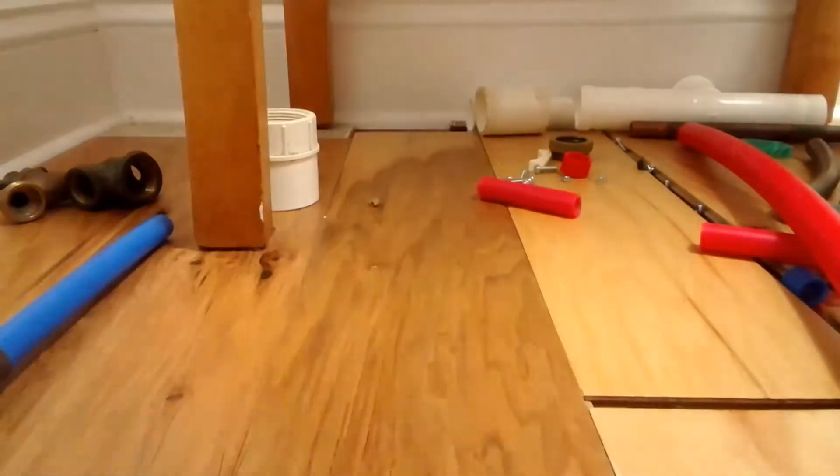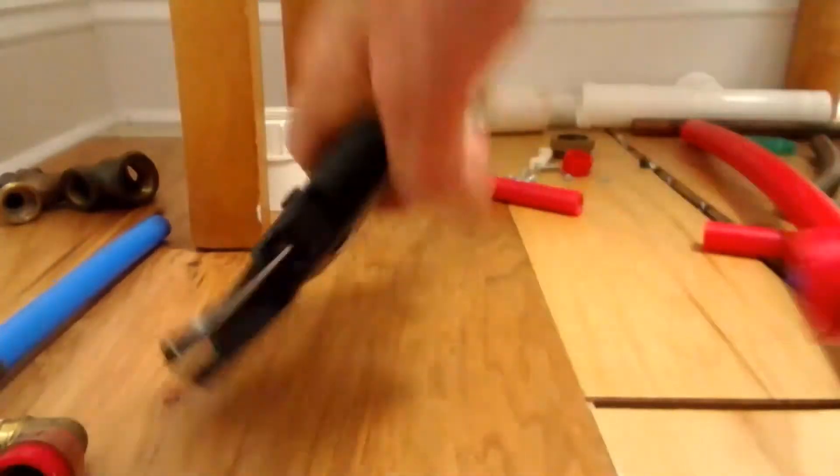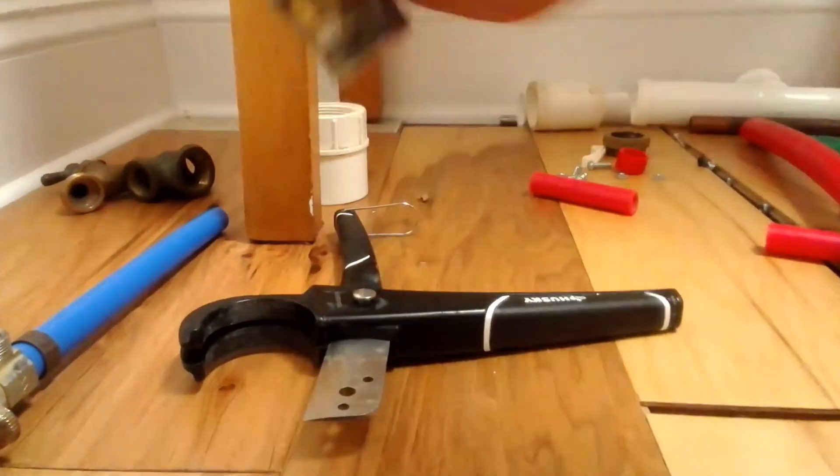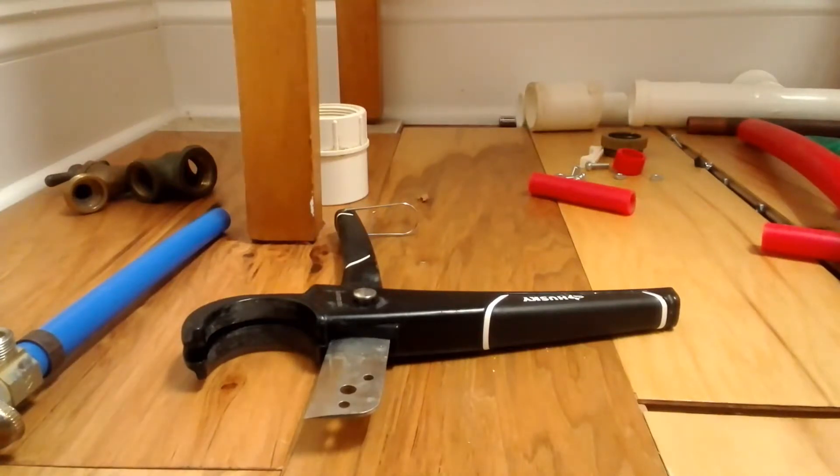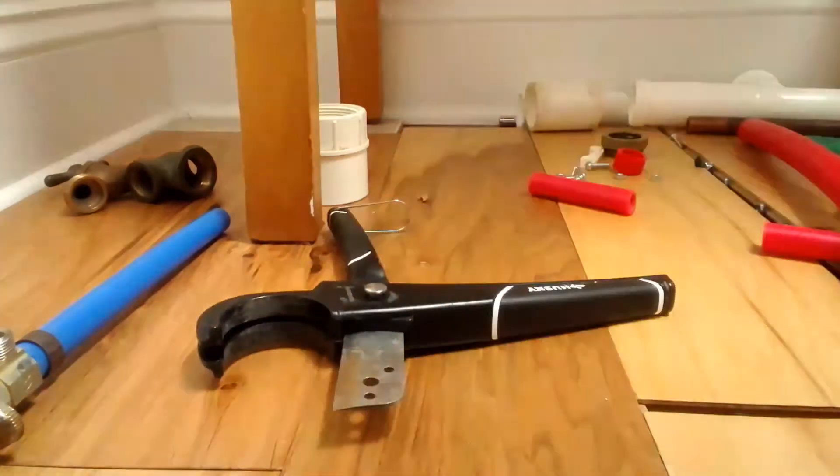And let's say that you made a mistake and you want to get it apart. You take it. It's called a crimp ring, a ring cutter. That little ring, it cuts the ring also there for you.